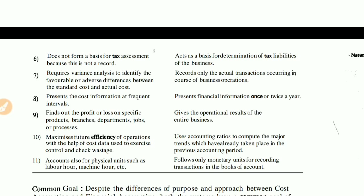The sixth difference: cost accounting does not form a basis for tax assessment because it is not considered an official record. Financial accounting, however, is the basis for determining tax liability — through financial accounting you determine how much tax you have to pay.